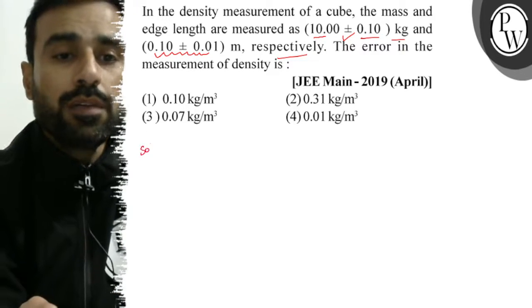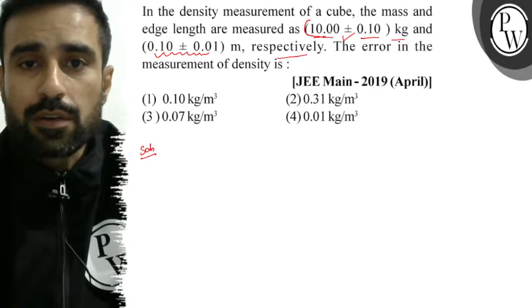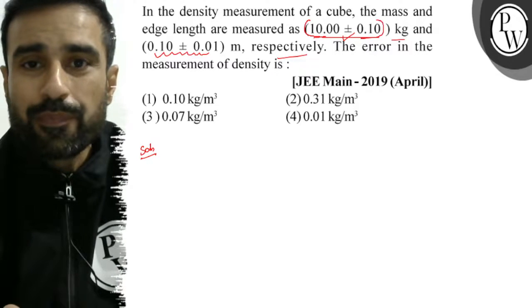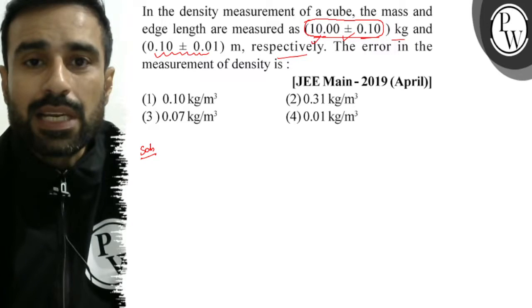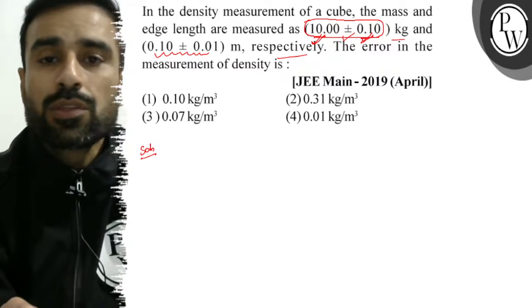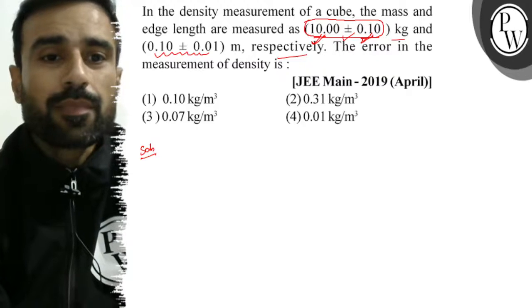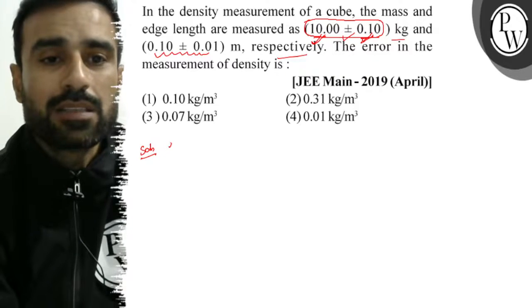So, the mass measurement value given here is 10, which is the absolute value, and 0.10 is the error. Therefore, the percentage or simply error in measurement of mass, that is, error in mass measurement...